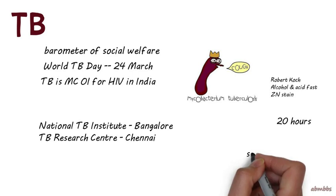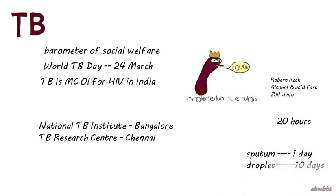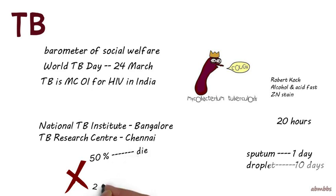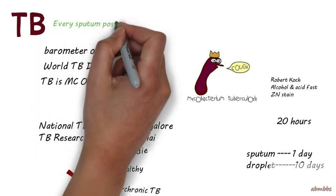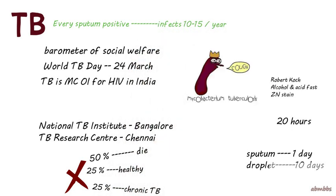TB bacterium remains alive in sputum for 1 day and in droplet nuclei for 10 days. An interesting fact is that without treatment, 50% of TB patients will die, 25% will develop chronic infection, and 25% will remain healthy. Every TB sputum positive patient can infect up to 10 to 15 individuals in a year.